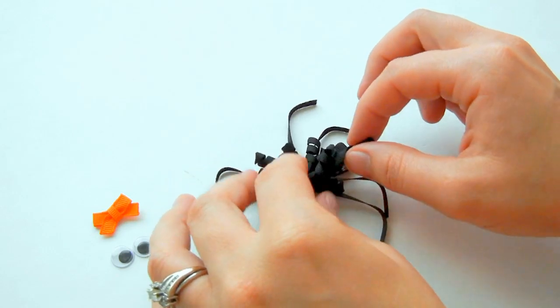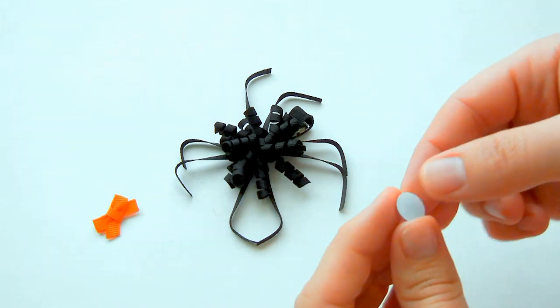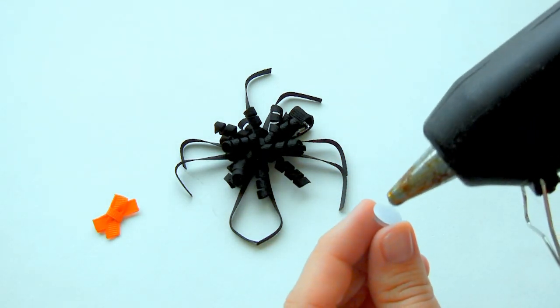Now we're going to add the googly eyes. So take an eye, put a dab of hot glue on it, and then put it on.